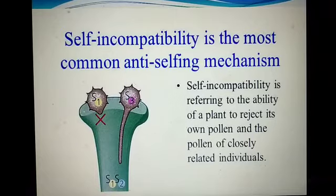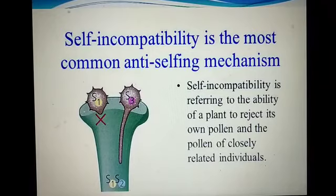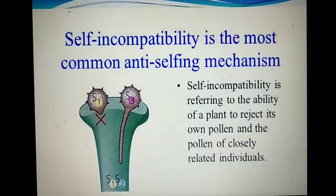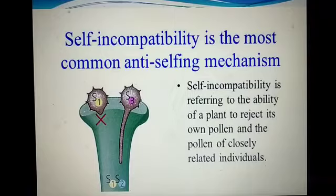The stigma has the ability to recognize and accept the right pollen. Sometimes the stigma rejects the pollen, and this condition is called self-incompatibility. Self-incompatibility is the ability of a plant to reject its own pollen — sometimes the stigma rejects the pollen of the same flower. This is also a genetic phenomenon.